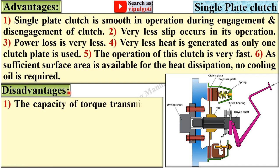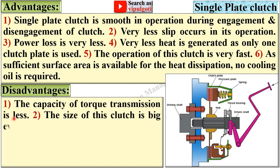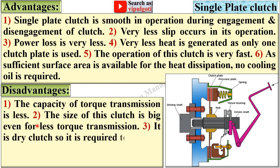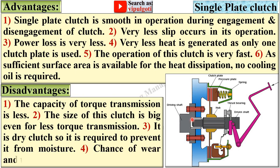Disadvantages: the capacity of torque transmission is less. The size of this clutch is big even for less torque transmission, because only a single plate is used. It is a dry clutch, so it is required to protect it from moisture. The chance of wear and tear is high in case of the single plate clutch.